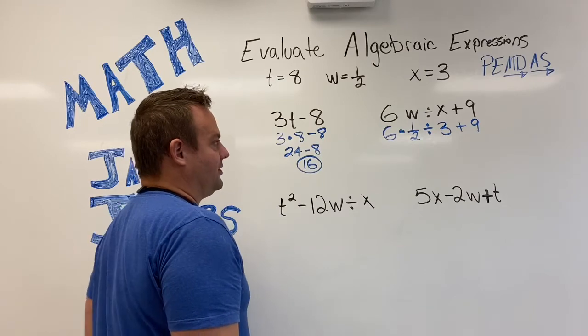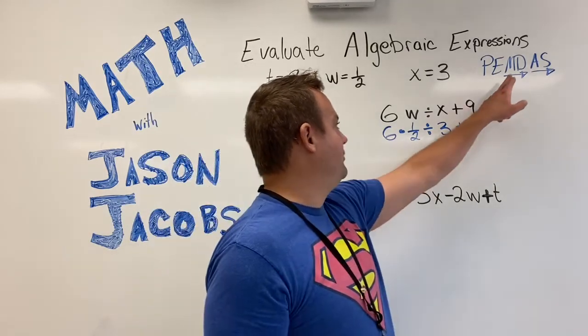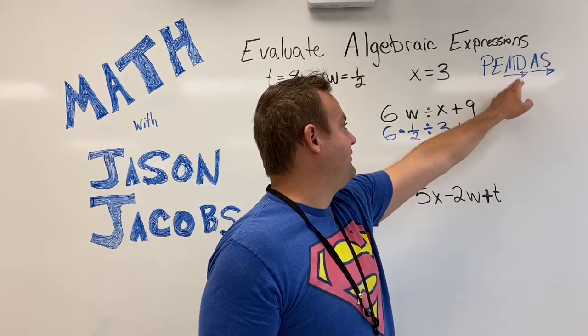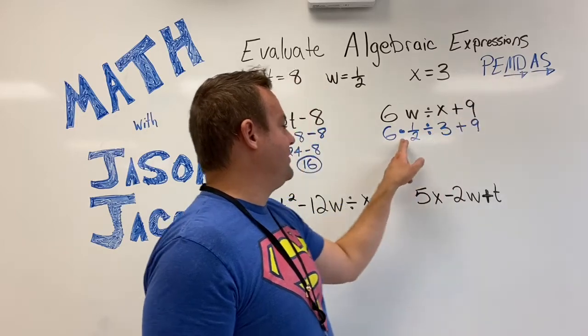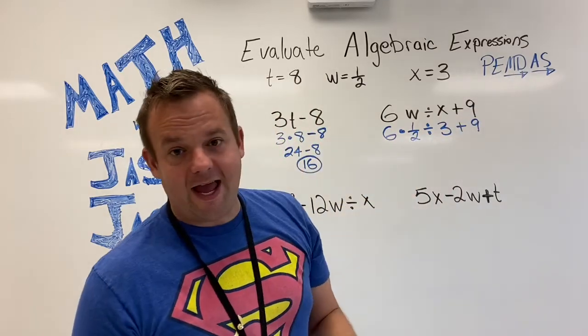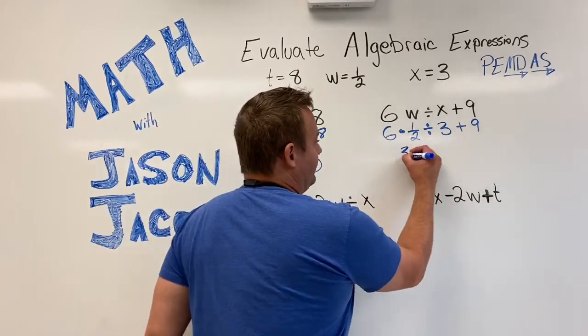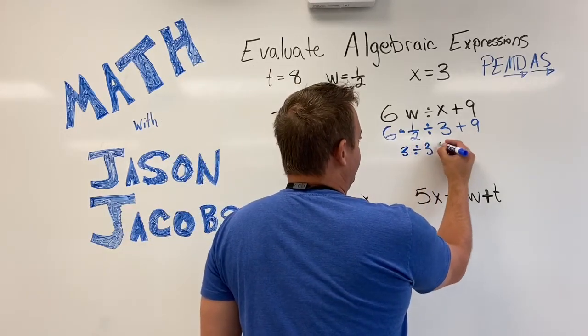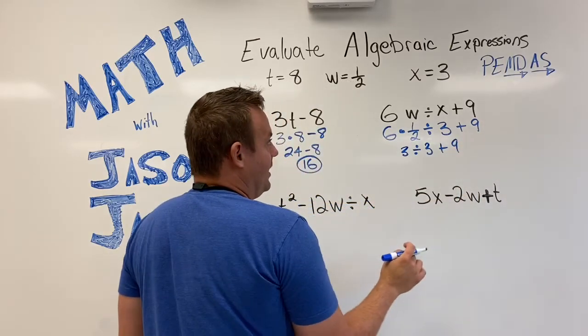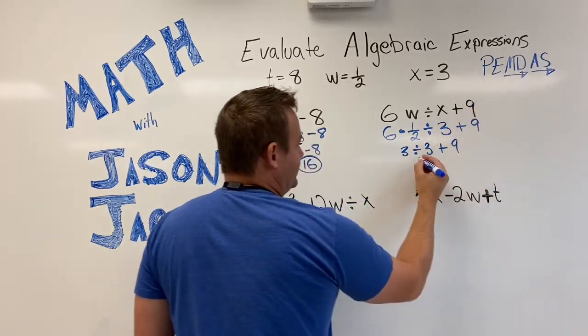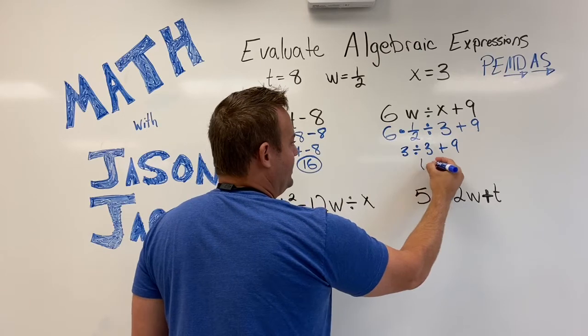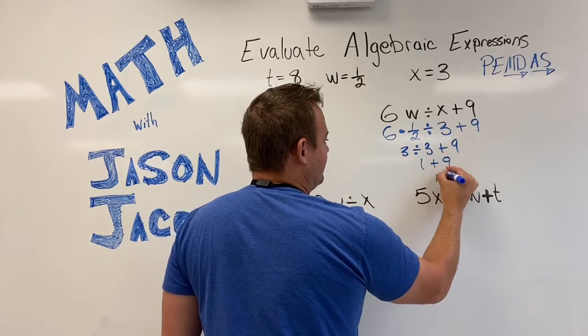All right. What comes first? Multiplication or division. Well, multiplication or division, first come, first serve. So in this case, multiplication is 6 times a half. That's 3. Half of 6 is 3. So we have 3 divided by 3 plus 9. Well, division comes before addition. So 3 divided by 3 is 1 plus 9, and that equals 10.